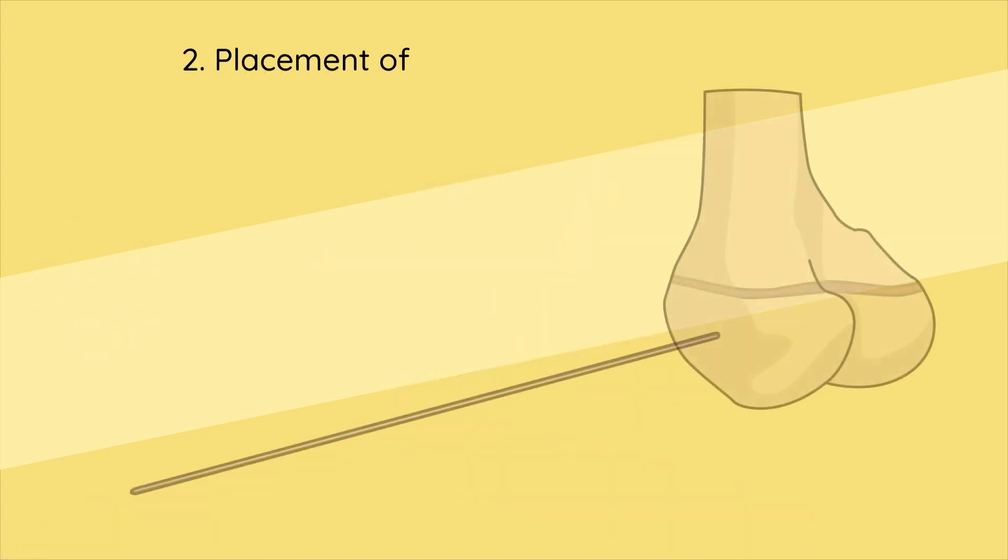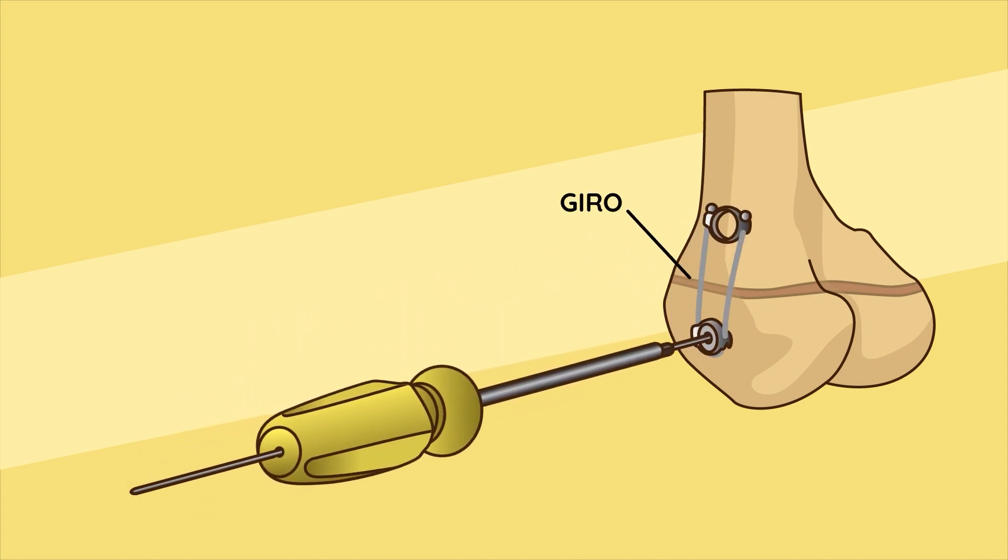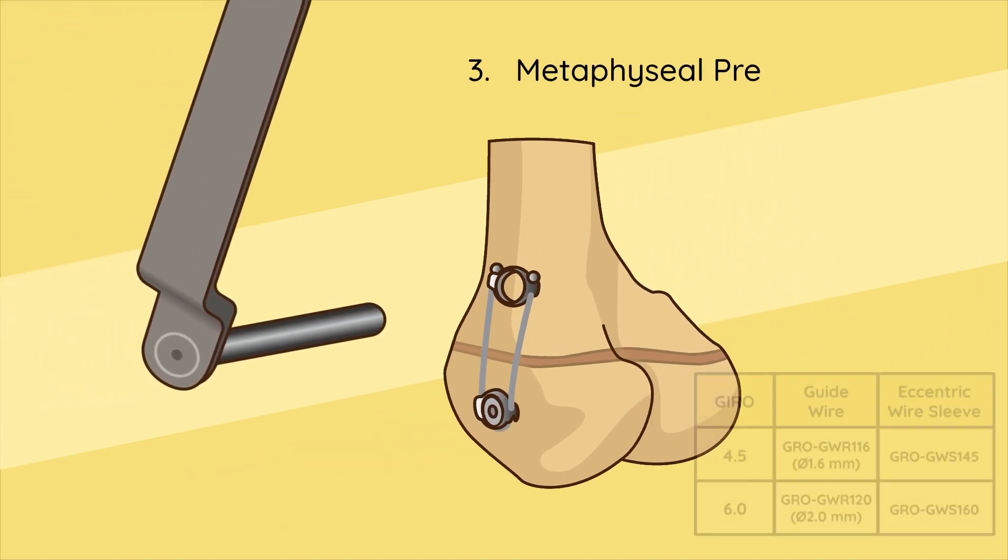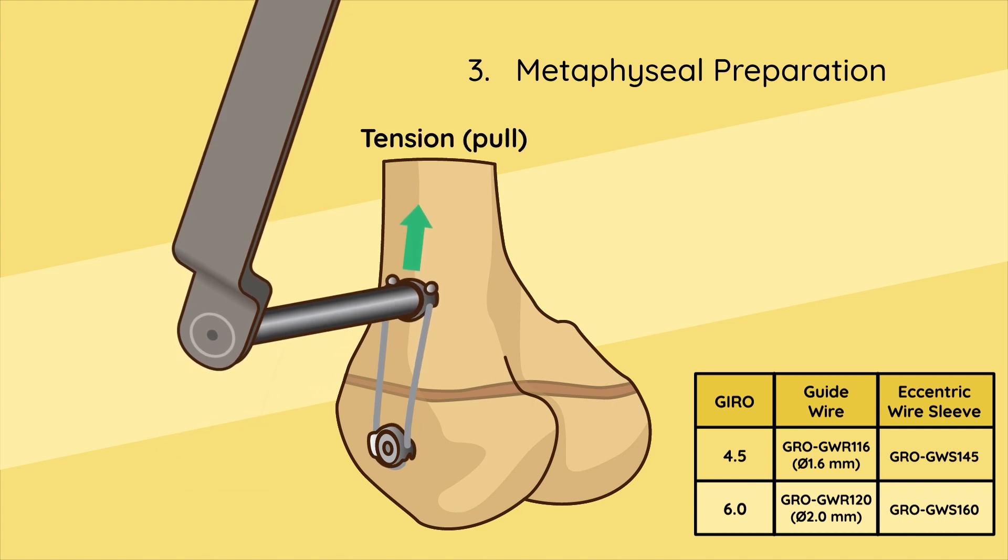Step two - placement of gyro and epiphyseal screw: Slide the desired gyro with the top marking face up along the guide wire. Insert the epiphyseal screw into the gyro. Step three - metaphyseal preparation: Tension the gyro with either the guide wire sleeve or eccentric wire sleeve and insert the metaphyseal guide wire.